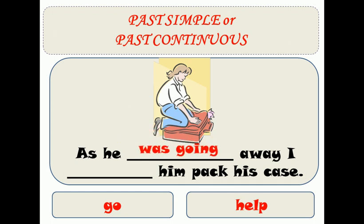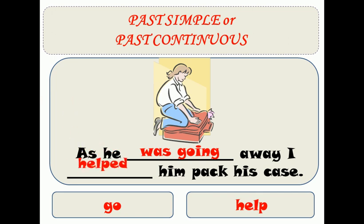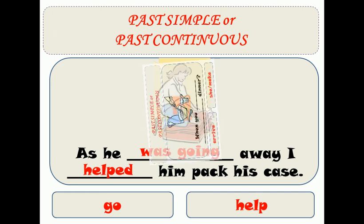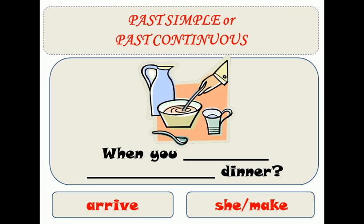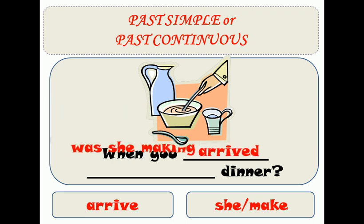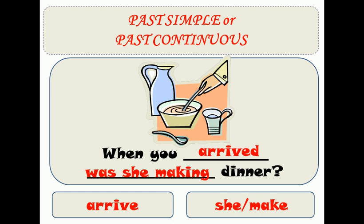As he was going away, as he wanted to travel, I helped him pack his case. And here: when you arrived, was she making dinner? So at that moment when you arrived home, was she making dinner?